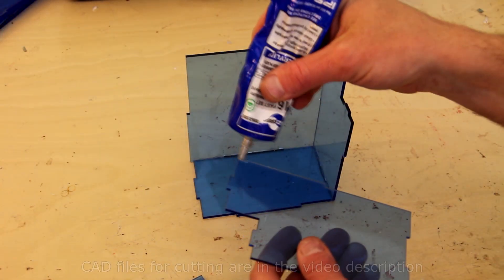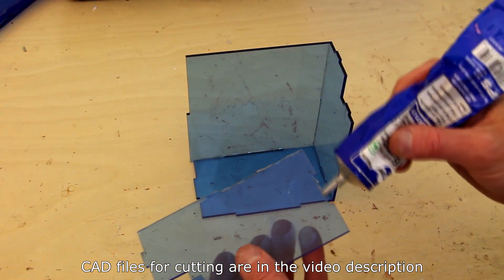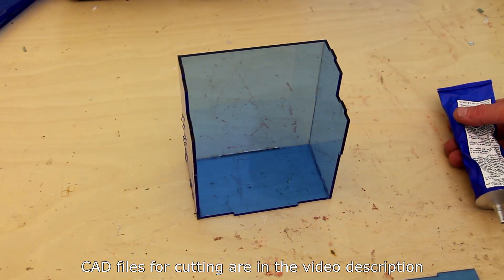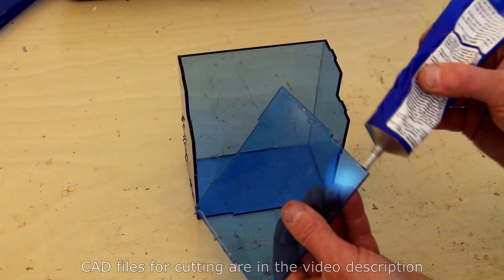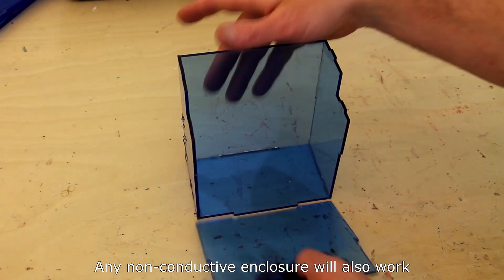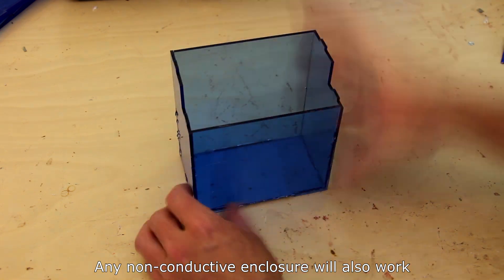To house my new battery I made this laser cut enclosure. The CAD files are available in the video description below. Simply take the CAD files to any laser cutter or water jet and ask them to cut it out. I'm using acrylic here to showcase the battery, but in all honesty ABS is probably a better material.